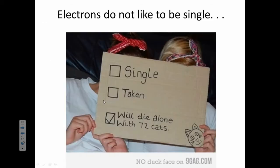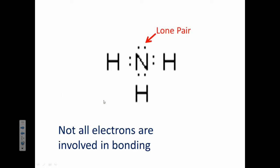Electrons do not like to be single. The ones that are not involved in bonding, but they're still paired up, they have a special name. They're called lone pairs. The other electrons are called the bonded pairs.